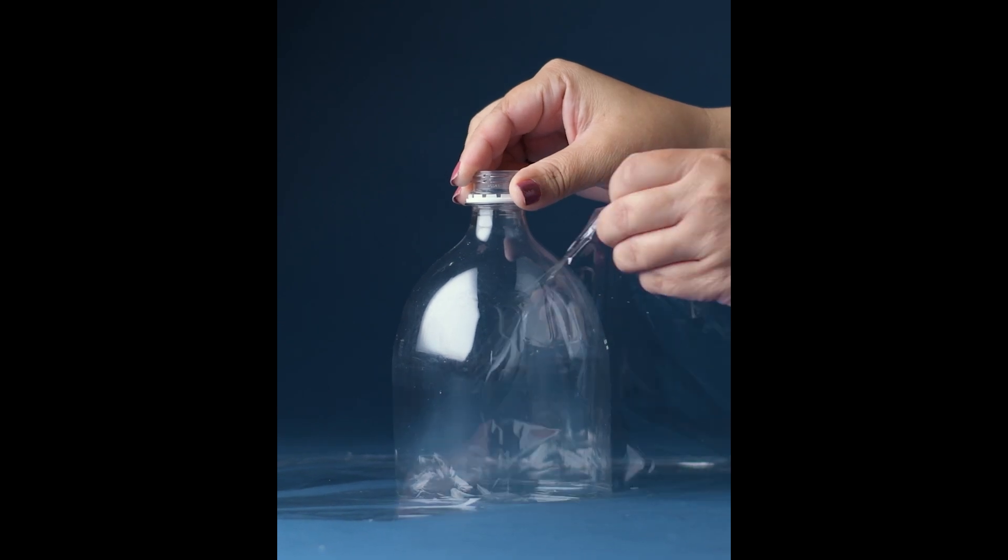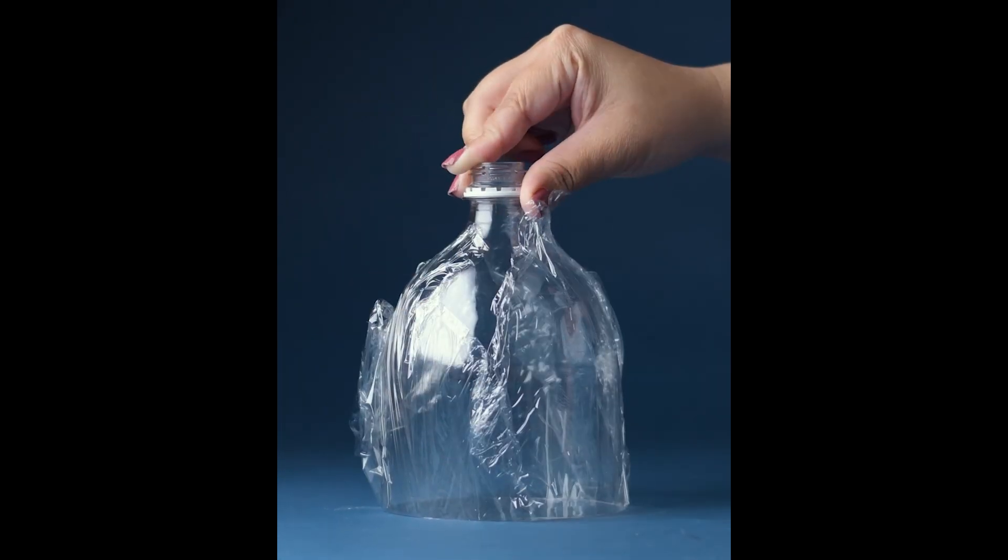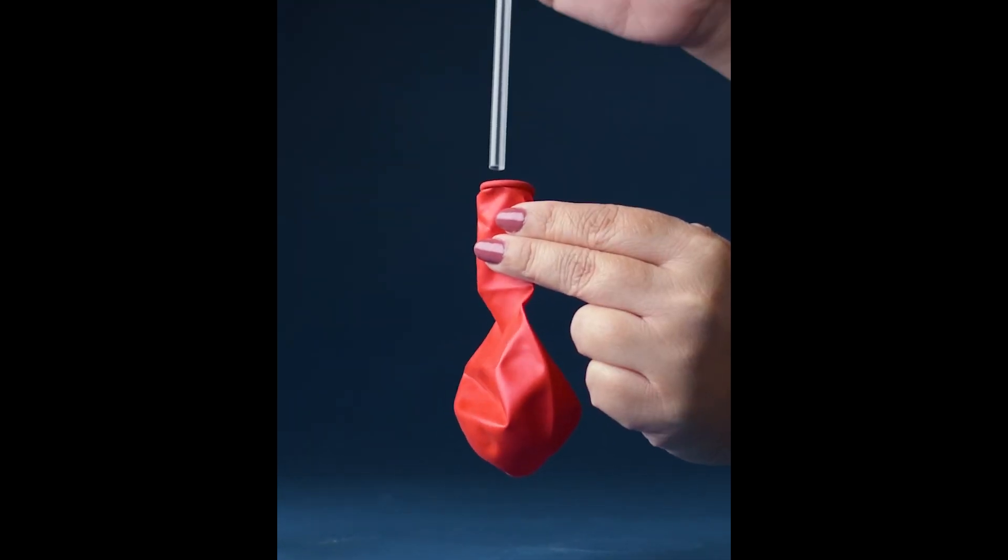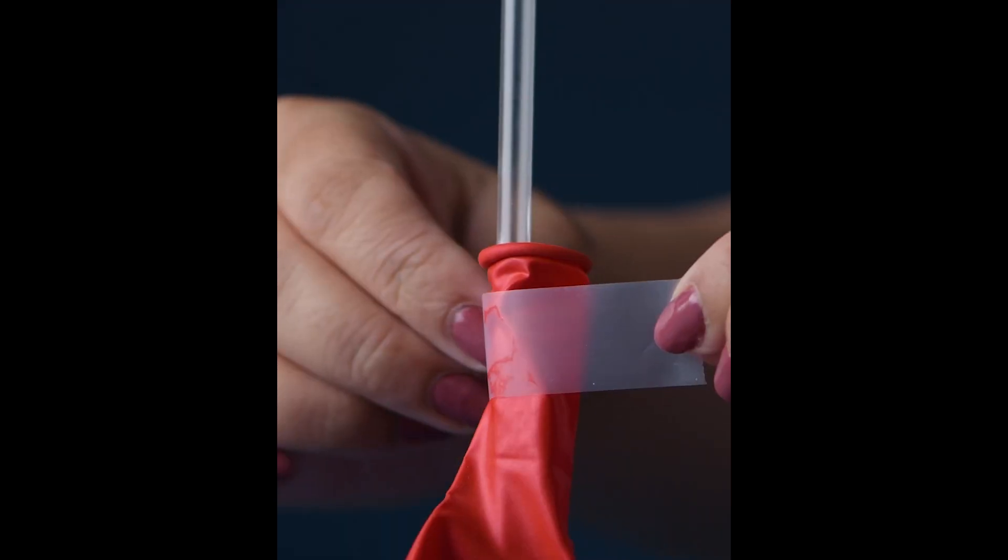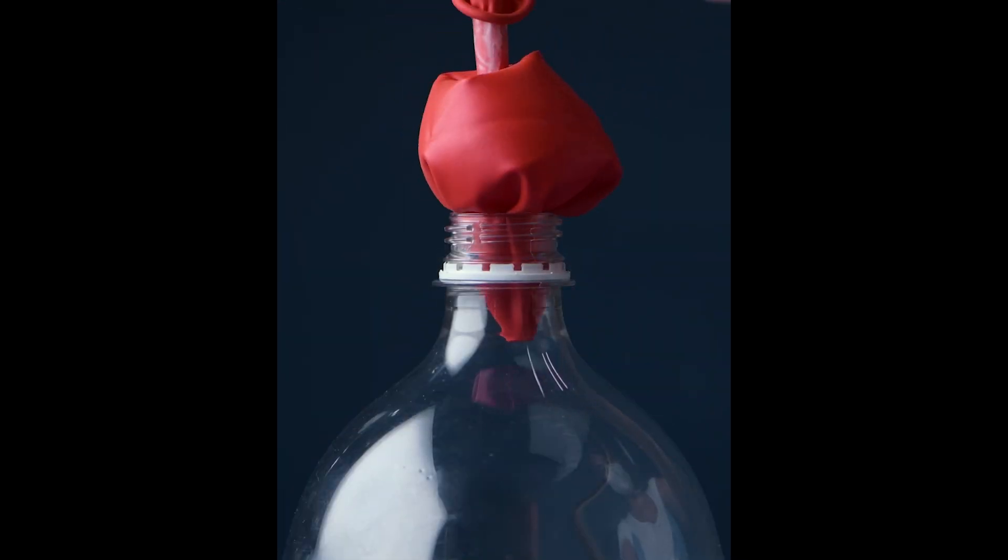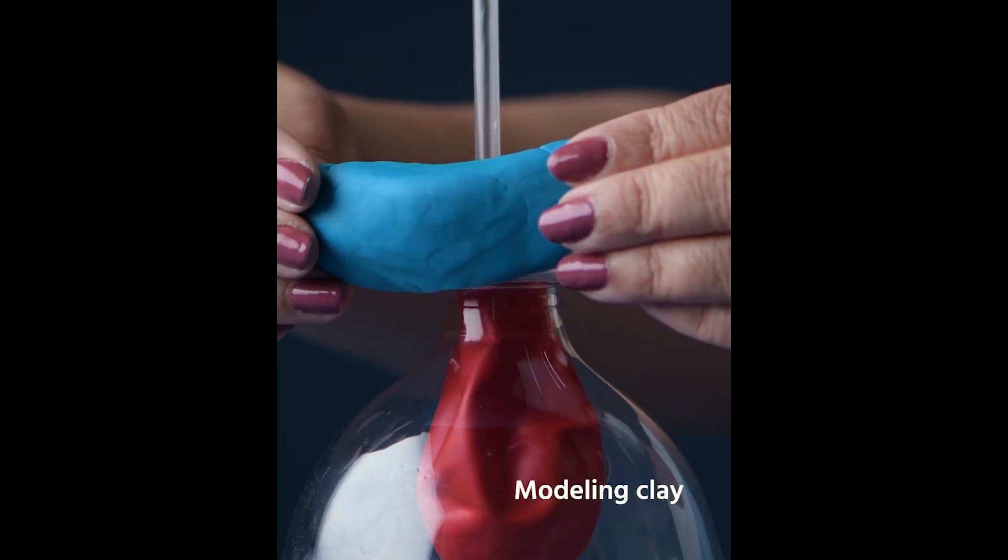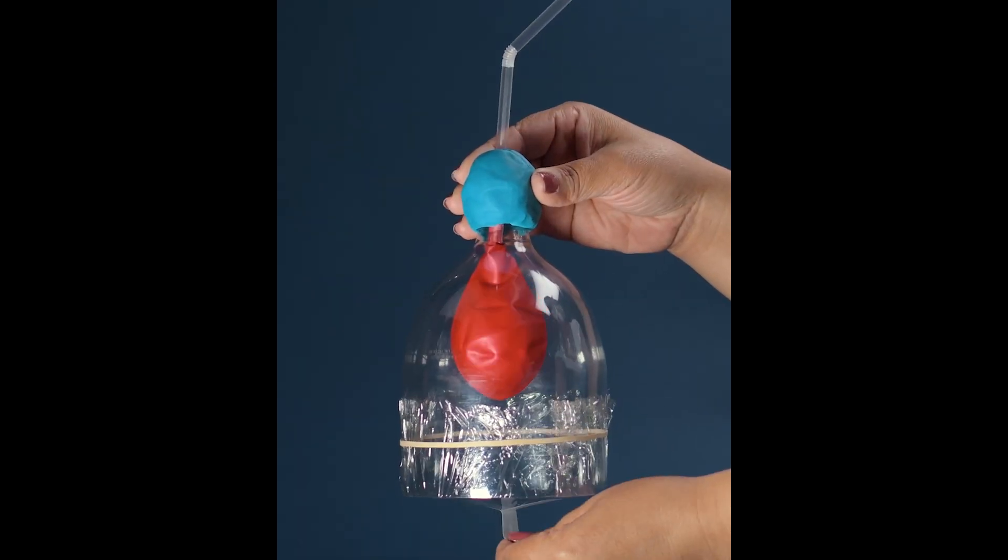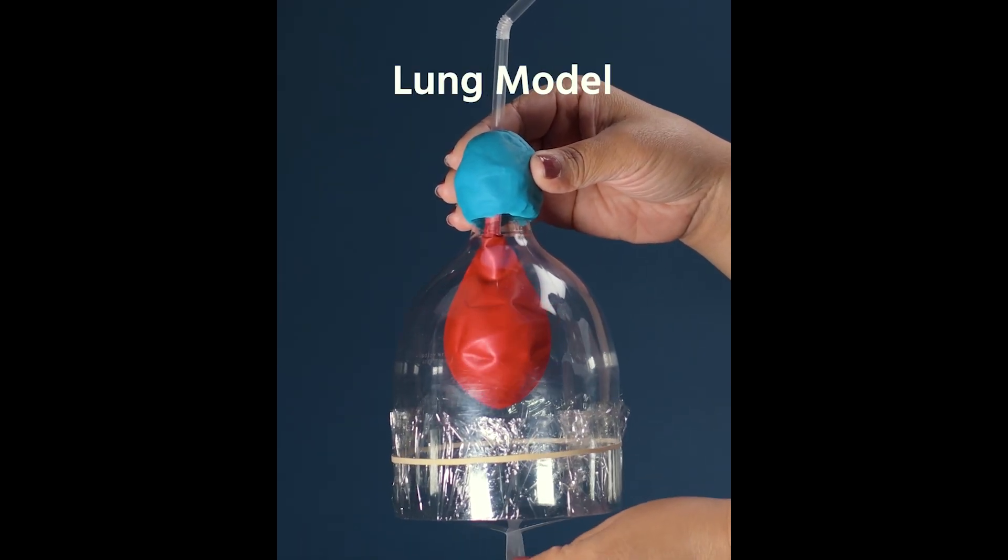Let's make a lung. Take a cut 2-liter bottle and cover the bottom with plastic and a rubber band. Taking a balloon, insert a straw and tape off the neck. Insert this into the bottle. Add modeling clay to seal off the top. Add a small tape tab to the bottom and pull. This shows how your lungs take in air.